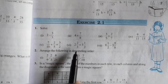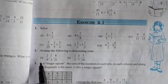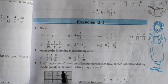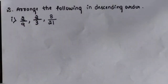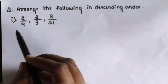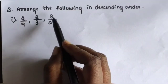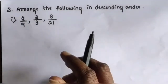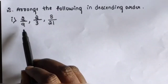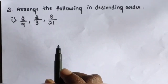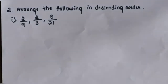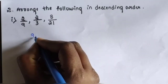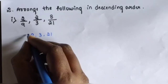Coming to question number 2: arrange the following in descending order. Sub-question 1: 2/9, 2/3, and 8/21. Do not directly arrange in descending order because the denominators are different. So find the LCM of 9, 3, and 21.